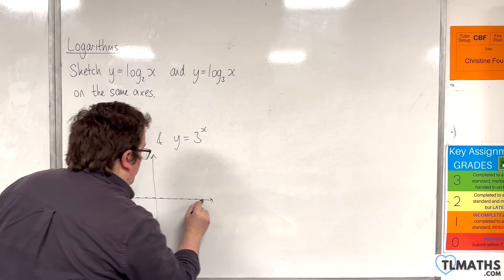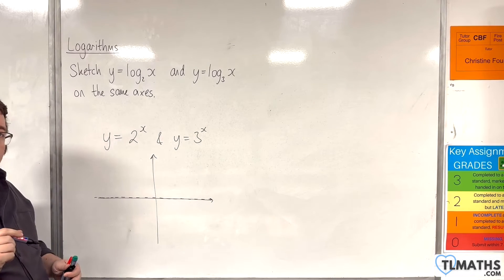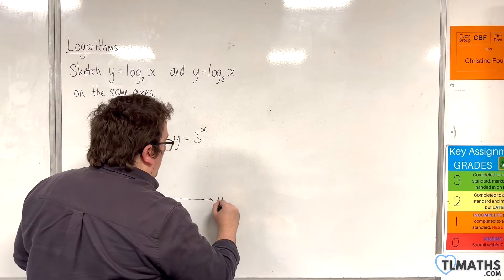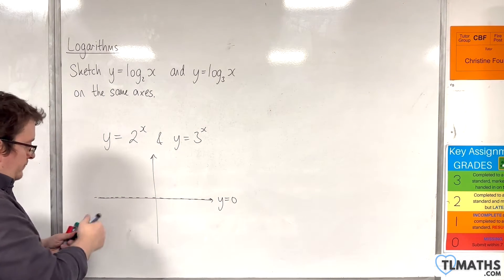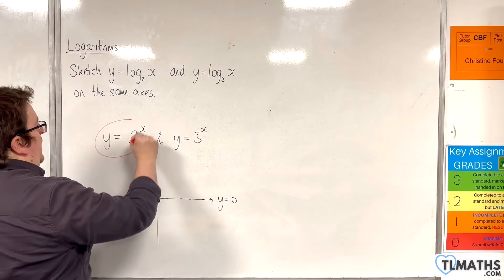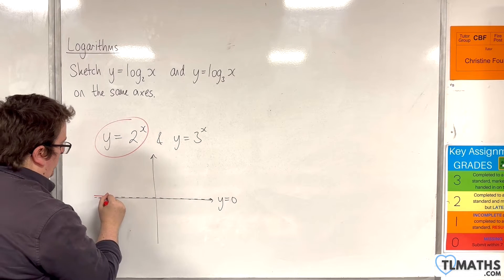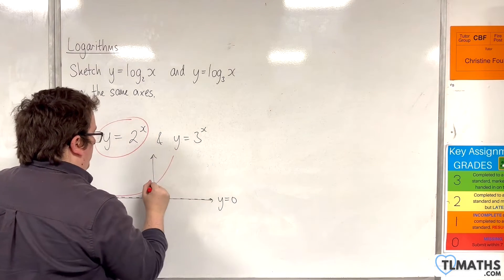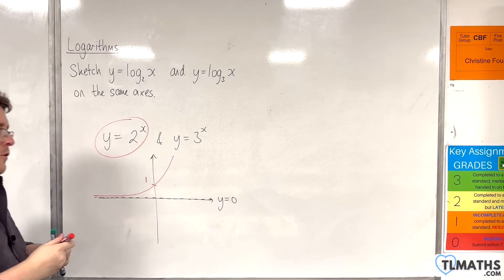Now, both of them have a horizontal asymptote on the x-axis, so y equals 0. And y equals 2 to the x would look something like this, going through 1 on the y-axis.